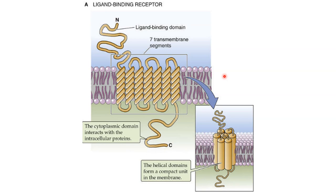This integral protein is a very large protein with an amino-terminal here and a ligand binding domain. What is a ligand binding domain? Ligand means a chemical — hormone or any messenger — it can bind here. So this is acting as a receptor. It traverses seven times — seven transmembrane segments — with a carboxyl-terminal, the cytoplasmic domain, interacting with intracellular proteins. When it binds with the chemical, it may open an ion channel. So it is called a ligand-gated channel.